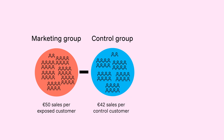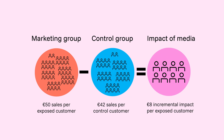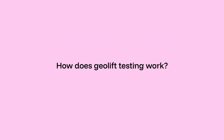You then compare the performance — for example sales and conversions — of the two groups to determine the additional impact of the marketing activity. Then you analyze by using statistical methods to ensure the difference in performance is statistically significant and attributable to the marketing activity.